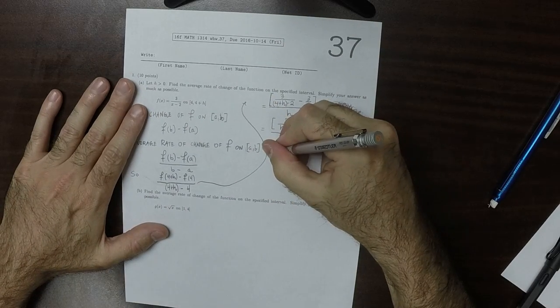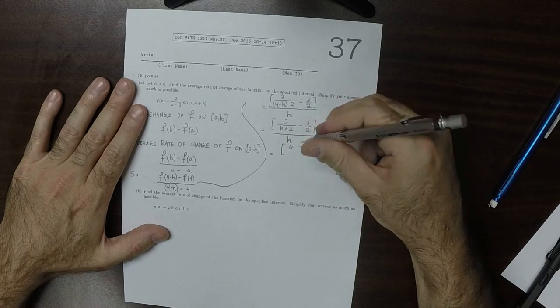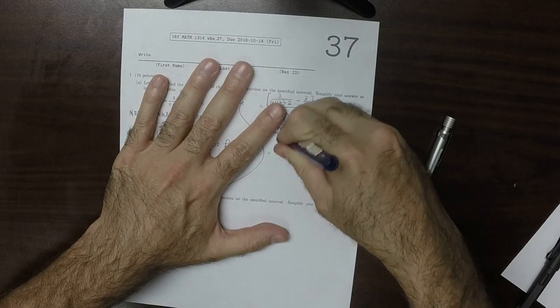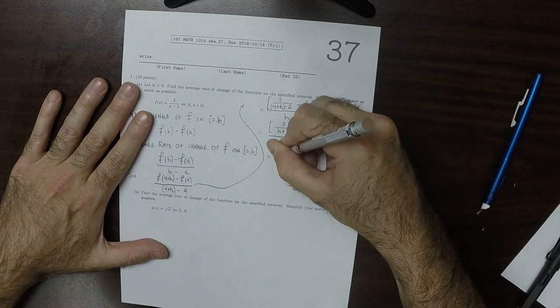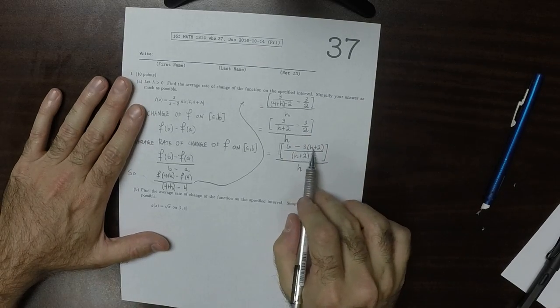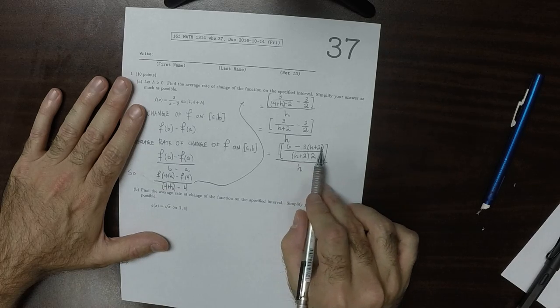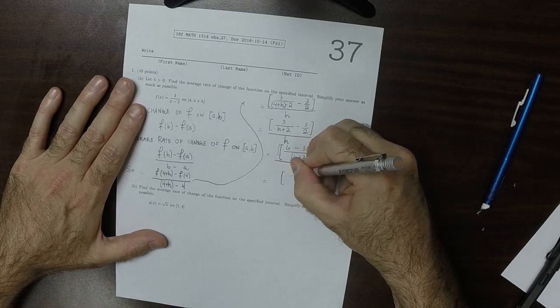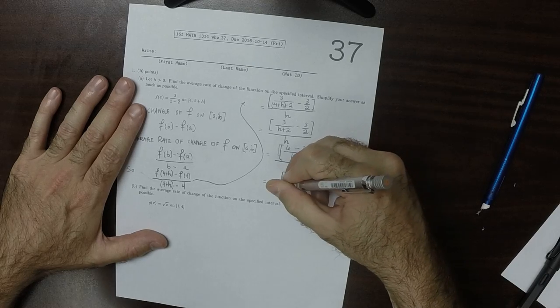So now I'll cross multiply within the numerator to get 6, and then minus 3(H+2), and then this over (H+2) times 2. So that's what's happening in the numerator, and that's all over H. And now notice that when you multiply out this, you get minus 3H, and then minus 3 times 2 is 6, so this is 6 minus 6. So all that remains in the numerator is negative 3H, and then over (H+2) times 2, and then that over H.